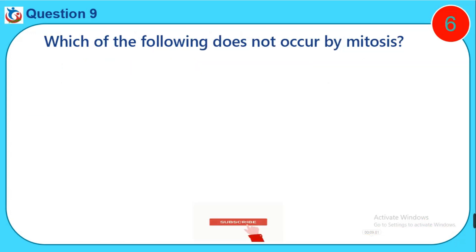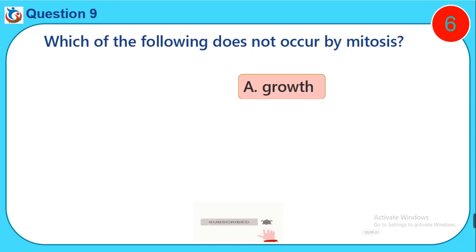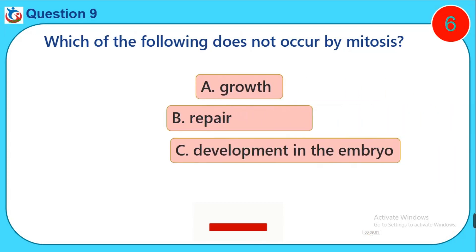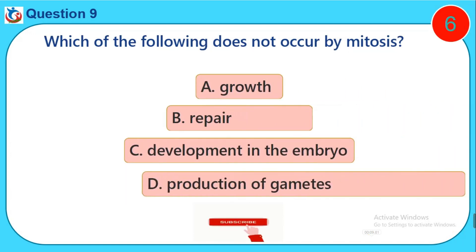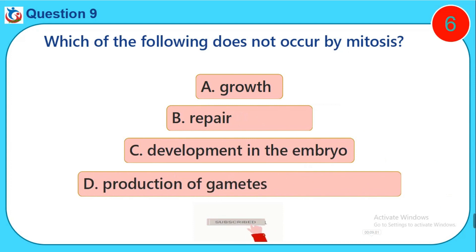Question nine: Which of the following does not occur by mitosis? A) Growth, B) Repair, C) Development in the embryo, D) Production of gametes.